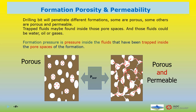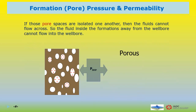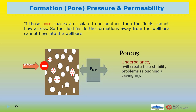Bottom-hole pressure must always be greater than formation pressure during drilling by maintaining a safe over-balance. If those pore spaces inside the formation are isolated from one another, then the fluids cannot flow across, so the fluid inside the formations away from the wellbore cannot flow into the wellbore. Even when fluid cannot flow across the pore spaces, it is important to maintain over-balance to avoid hole stability problems. Under-balance while drilling a porous formation could lead to hole problems like sloughing or caving in.